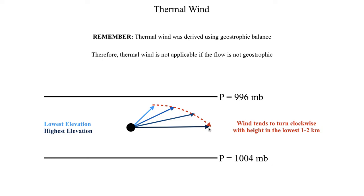If you look at soundings that have cold front passages — which is the technical term for that — you'll talk more about this in your synoptic laboratory in your senior year. But you can tell what the depth of the cold front is by seeing how much the wind backs: at the altitude where the wind stops backing with height, that's basically how high the cold front is above the ground. To reiterate, thermal wind is only applicable if geostrophic wind is also applicable — so you can't use thermal wind near the equator, and thermal wind also does not apply well when you've got significant friction, which is usually in the lowest 1 to 2 kilometers of the atmosphere.